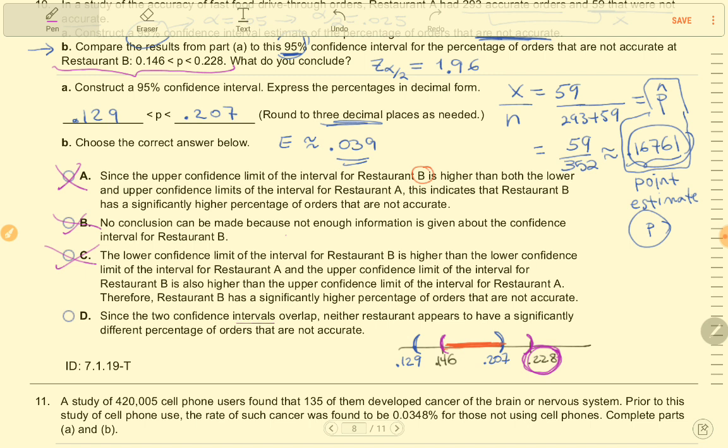Answer D says, since the two confidence intervals overlap, sounds good so far, doesn't it? Neither restaurant appears to have a significantly different percentage of orders that are not accurate. That's it. That's the one.